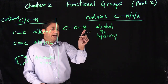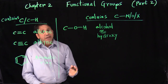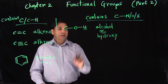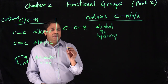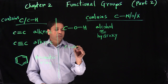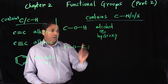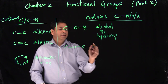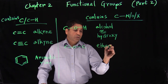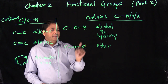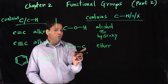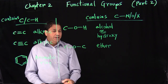Any time you see a hydrogen, it can potentially be replaced with a carbon. So if I replace that hydrogen with a carbon, it becomes an ether. You can just replace the hydrogen with a carbon and alcohol becomes an ether.